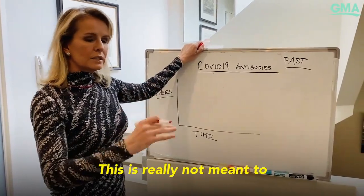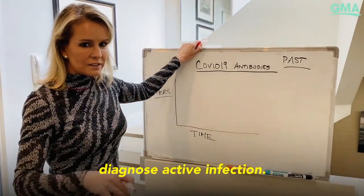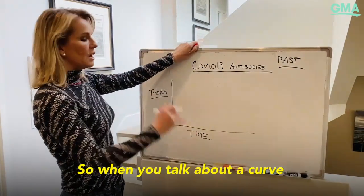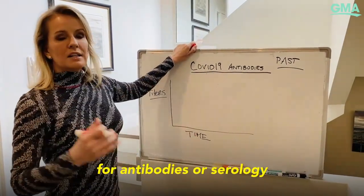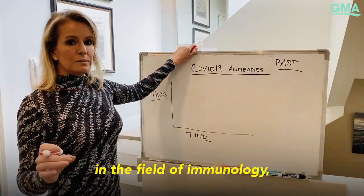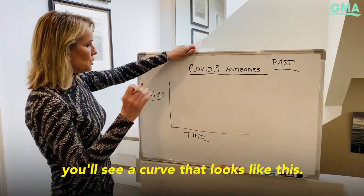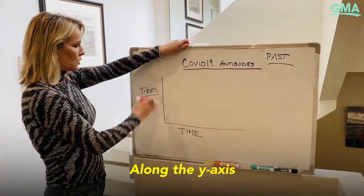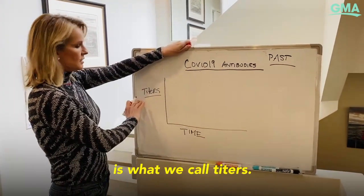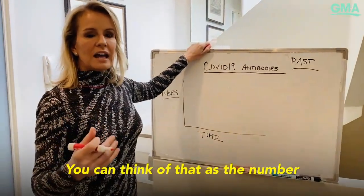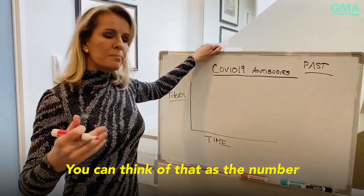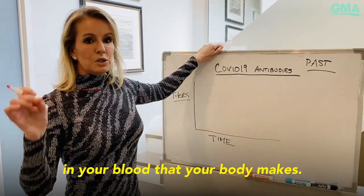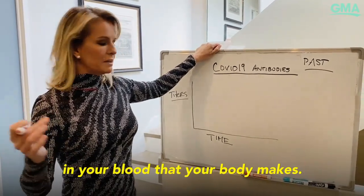This is really not meant to diagnose active infection. When you talk about a curve for antibodies or serology in the field of immunology, you'll see a curve that looks like this. Along the y-axis is what we call titers — you can think of that as the number, level, or amount of antibodies in your blood that your body makes.